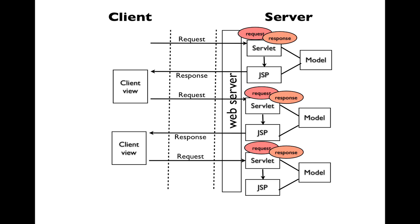When the client does a few things after receiving the response, it may then send another request back to our application. At this time we have new request and response objects. These will be active until the response is sent back to the client, which again could send more requests later, giving us new request and response objects. So using the request and response objects we have the capability of keeping data that will persist from the time the request is received until the response is sent back to the client.